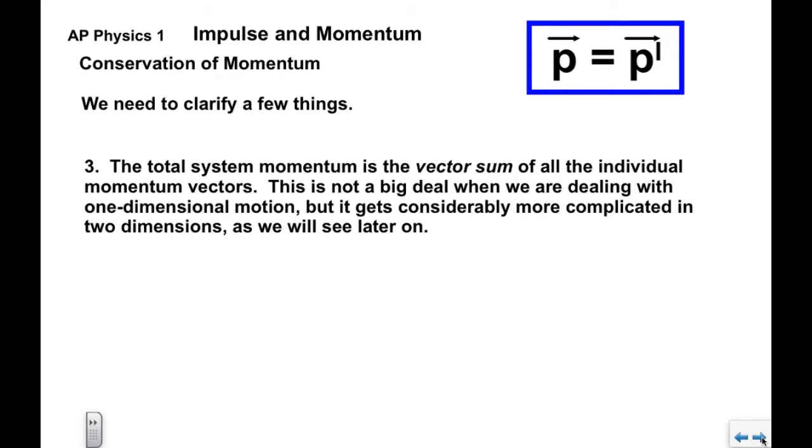The total system momentum is the vector sum of all the individual momentum vectors. This is not a big deal when we're dealing with one-dimensional motion, but it gets considerably more complicated when we get to two dimensions, as we'll see later on. The key thing is that it's a vector sum, so we have to take into account the directions.